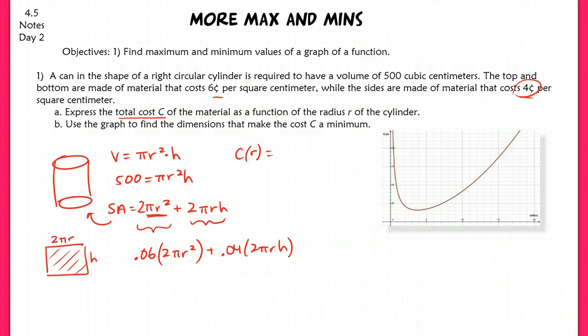This function is going to give me the cost. So I want to rewrite this up here: 0.06(2πr²) + 0.04(2πrh). Now looking at this, it's almost all in terms of r. The only thing is that I have this h that I need to get rid of. So I go back to my constraint. My constraint here allows me to solve for h so that I can substitute that in.